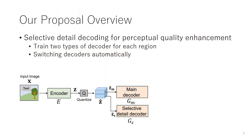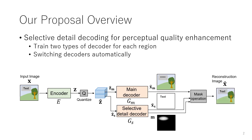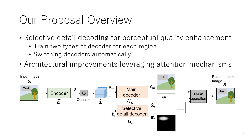Our solution is training two types of decoders. A main decoder outputs the full image and is trained with a GAN discriminator. A selective detail decoder specializes for specific parts such as text and human faces, trained with an MS-SSIM-based loss function. The selective detail decoder additionally outputs an alpha mask, which is used to switch between the two decoder outputs to generate a final reconstruction. We also have architectural improvements leveraging an attention mechanism.